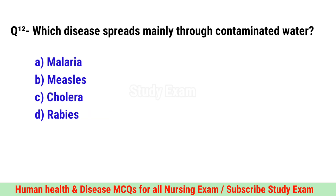Question No. 12. Which disease spreads mainly through contaminated water? Correct option is C. Cholera.